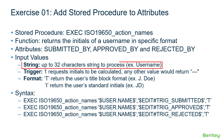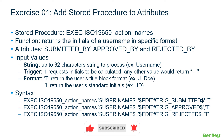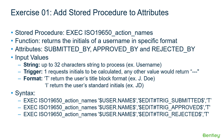The input values for the stored procedure are: first, a string representing the user name up to 32 characters; second, a trigger — the number 1 requests initials to be calculated; if any other value is submitted, the stored procedure returns dash-dash-dash. The third input is the format to return. Submit T to return the user's title block format, which is their first initial followed by the last name. If you submit I, the stored procedure returns the user's standard initials, which is just the first and last name initials.